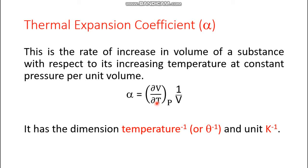So del V by del T is a positive parameter — it means the rate of increase in volume with respect to increasing temperature if the pressure is kept constant. If this rate is taken per unit volume, that means the whole expression is divided by the total volume V. So alpha, the thermal expansion coefficient, is the rate of increase in volume of a substance with respect to its increasing temperature at constant pressure per unit volume.